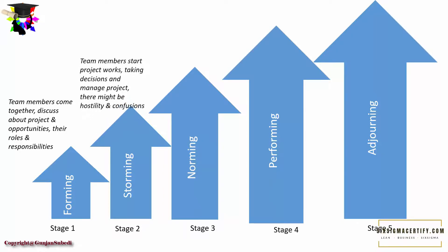In the second stage, the team members start doing the project work and they gradually start to take decisions and manage the project. As they have just started, there may be some hostility or confusion, which generally happens if the project members are not trained in project management, or if their roles and responsibilities were not defined well in the forming stage.